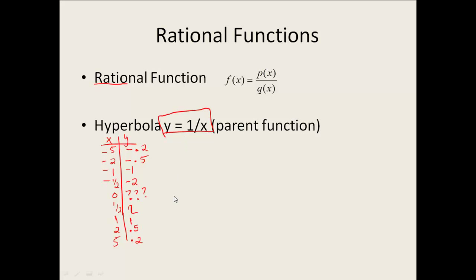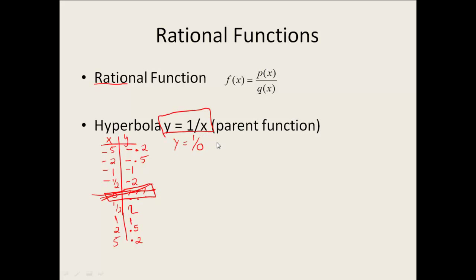Now when you've filled in your table of values, you should have run across a problem right here. When you plug 0 in there, that problem has to deal with our domain restrictions — I cannot divide by 0, so I am not allowed to have 0 in my domain, which means I do not have that value. So for my hyperbola, my domain would be all real numbers except for 0.